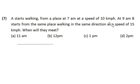at a speed of 10 km per hour. At 9 a.m., B starts from the same place walking in the same direction at a speed of 15 km per hour. When will they meet? A is starting at 7 a.m. and B starting at 9 a.m.